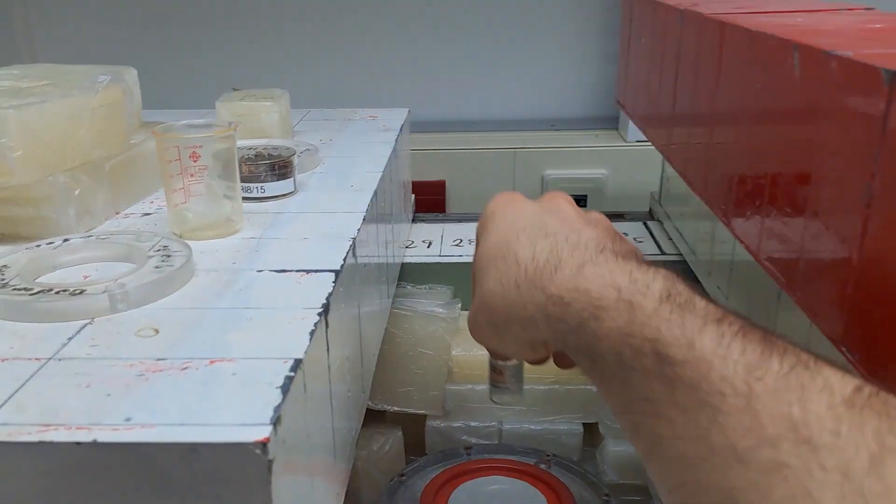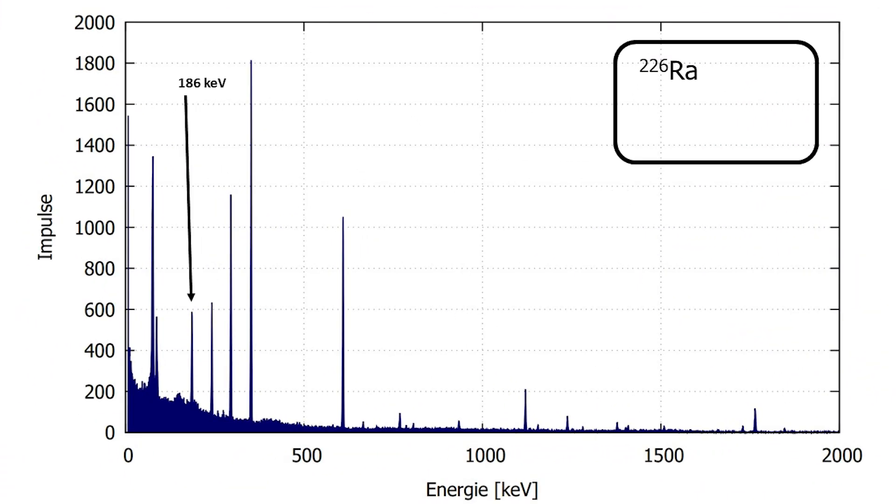What can we see in this spectrum? Clearly, we can see radium-226 at 186 keV along with its decay products like lead-214 and bismuth-214.